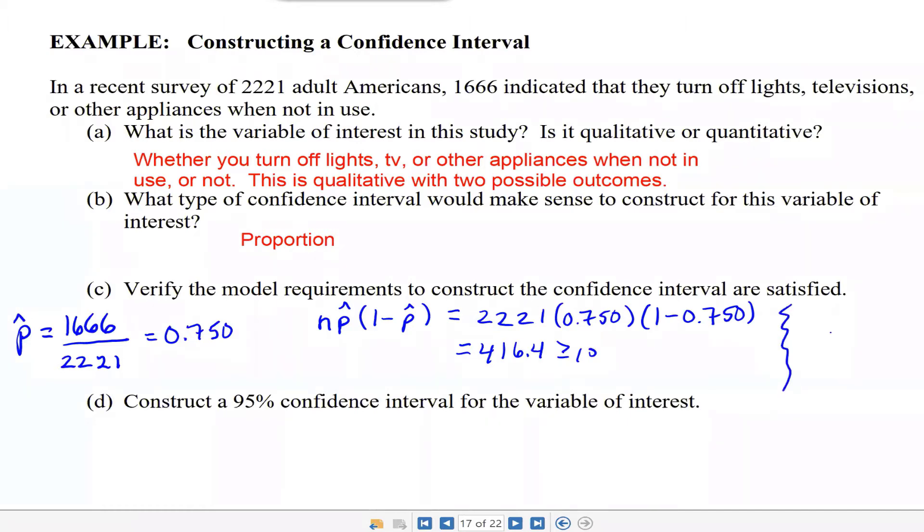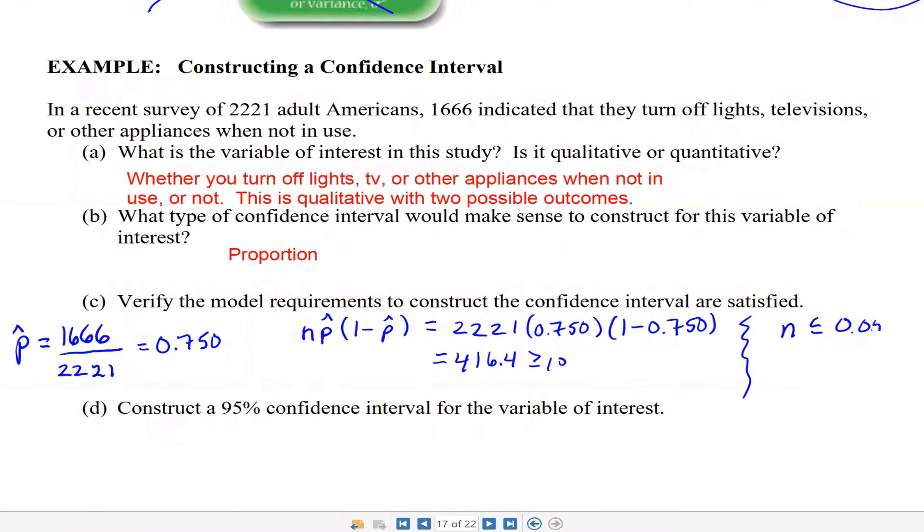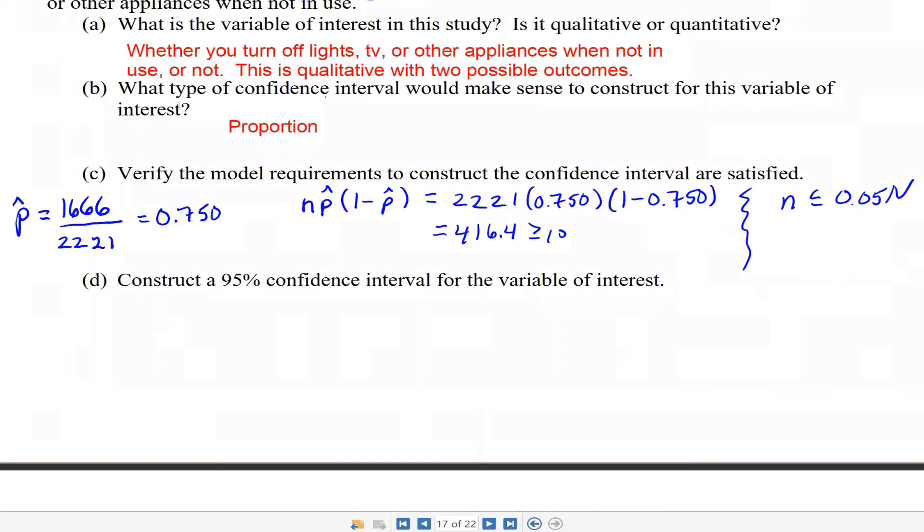The other requirement is that the sample size can be no more than 5% of the population size. Our population of interest is all adult Americans, about 200 million, so 2,221 is most definitely less than 5% of 200 million. That requirement of independence is satisfied. Now we can construct a confidence interval for a proportion.